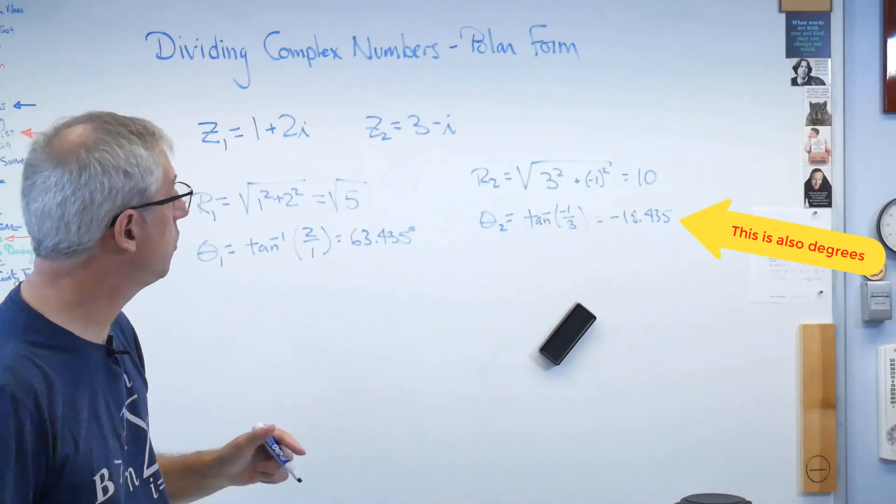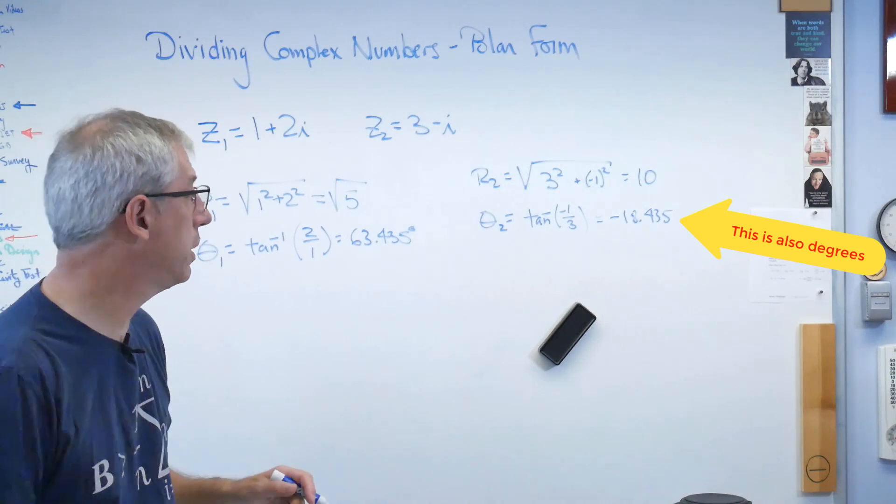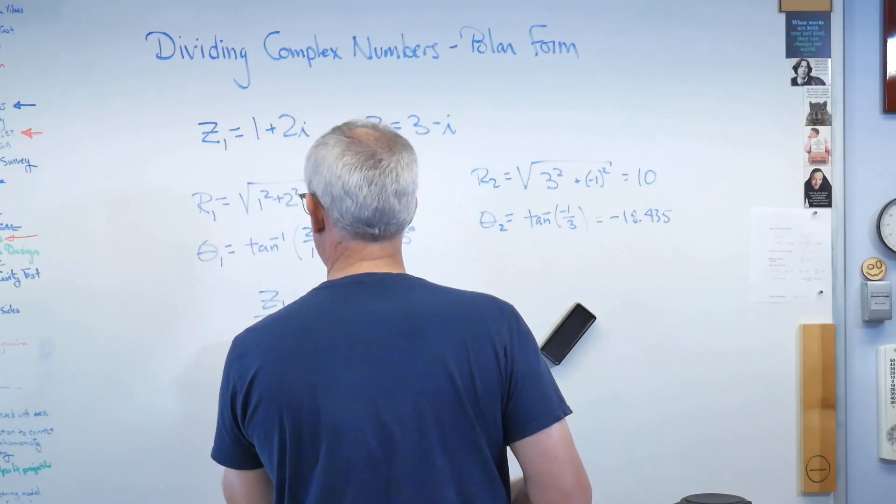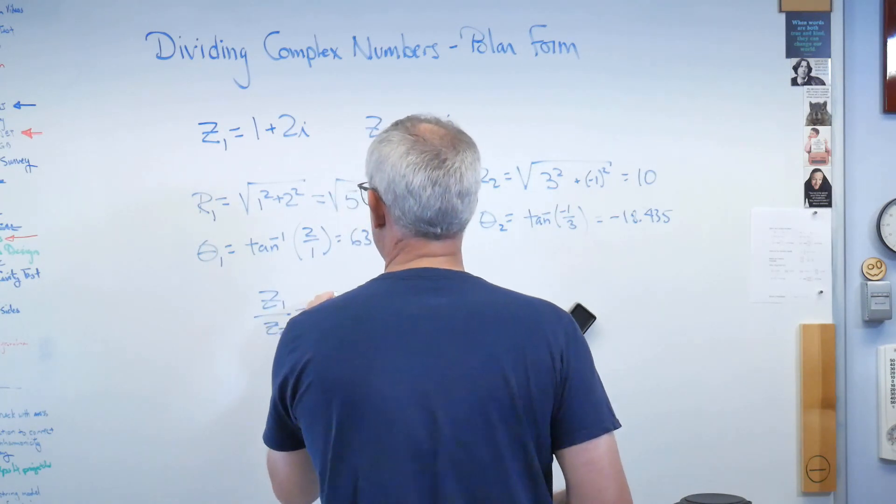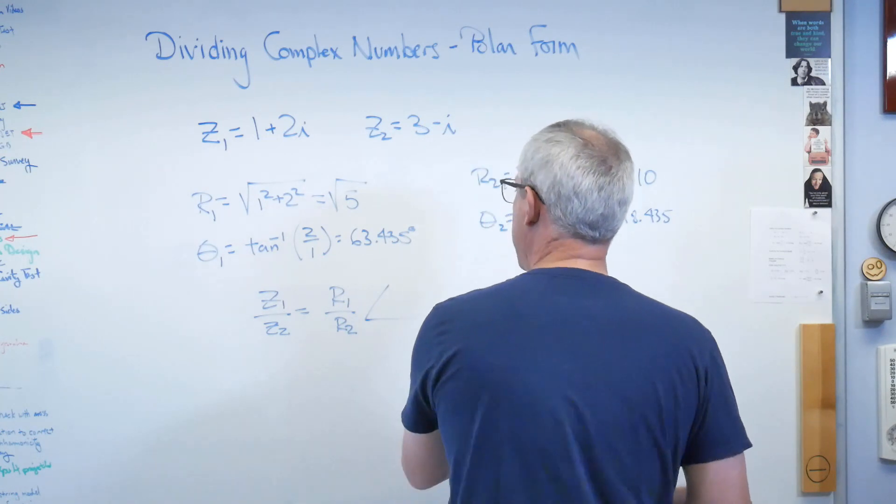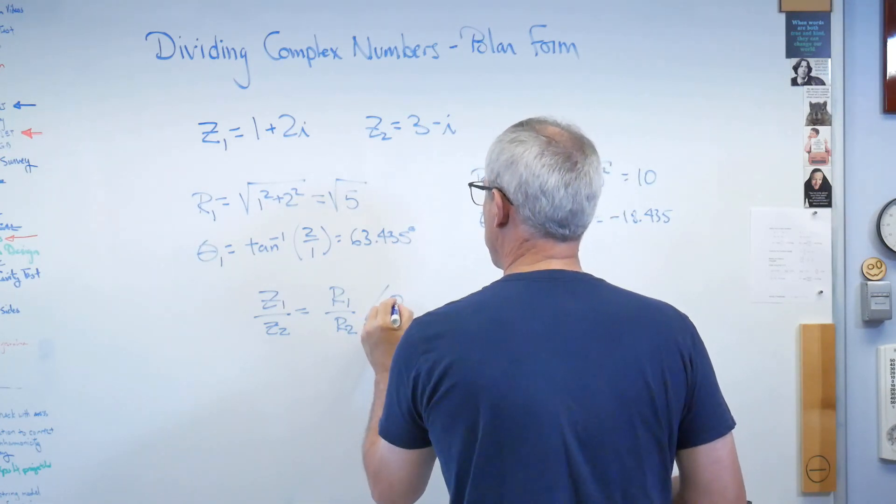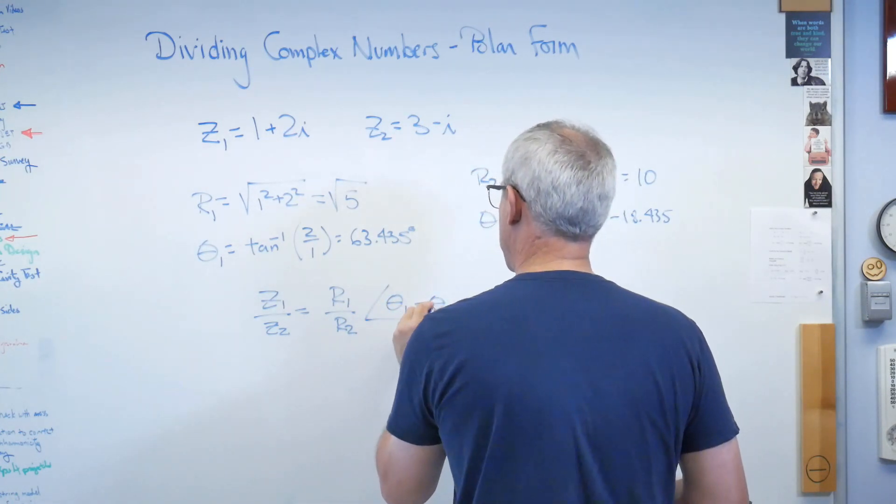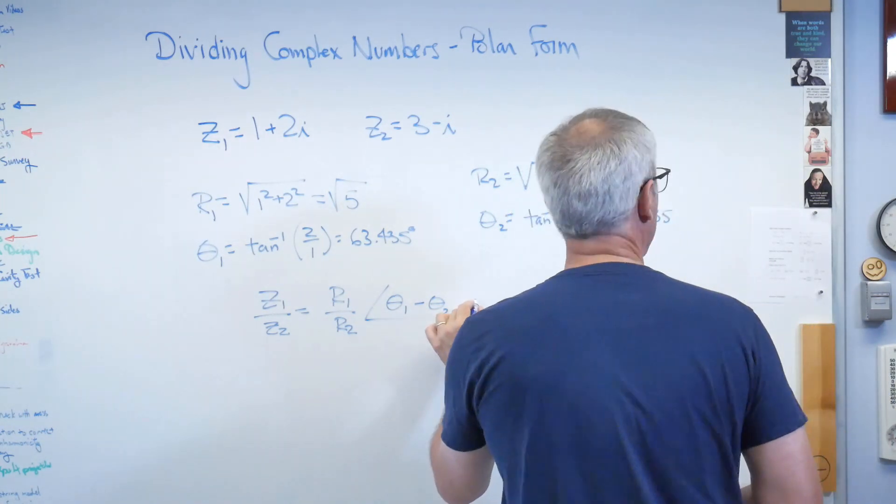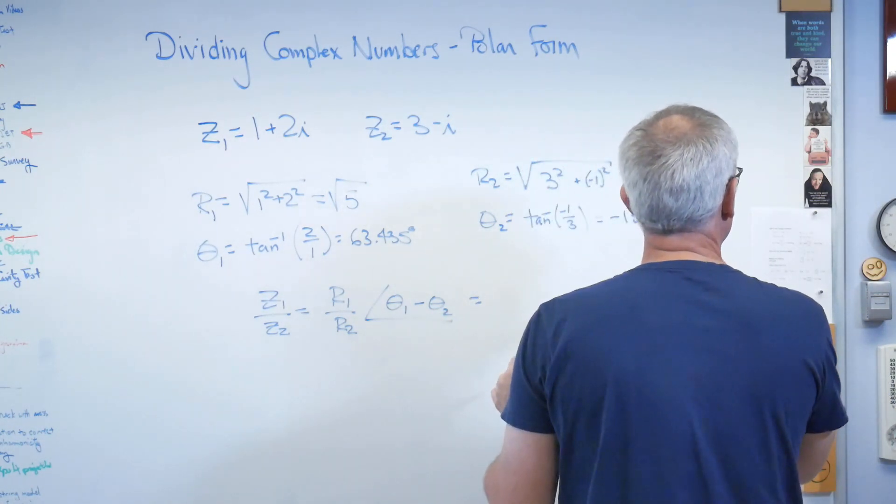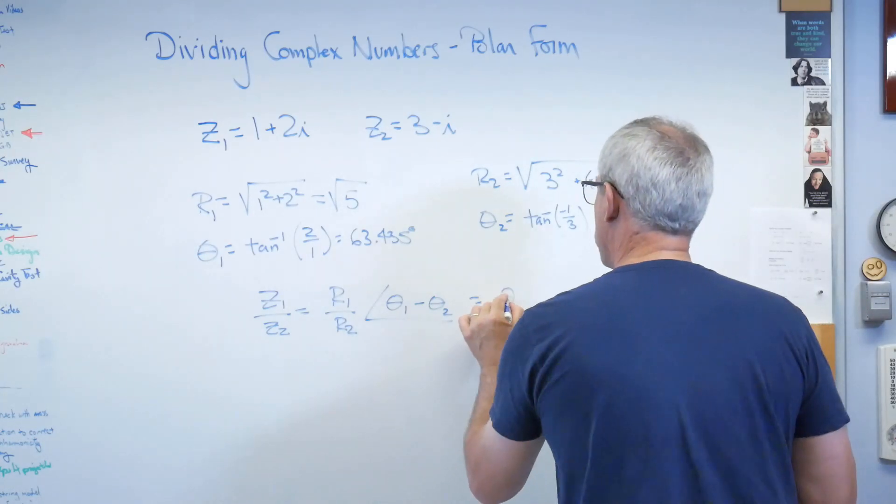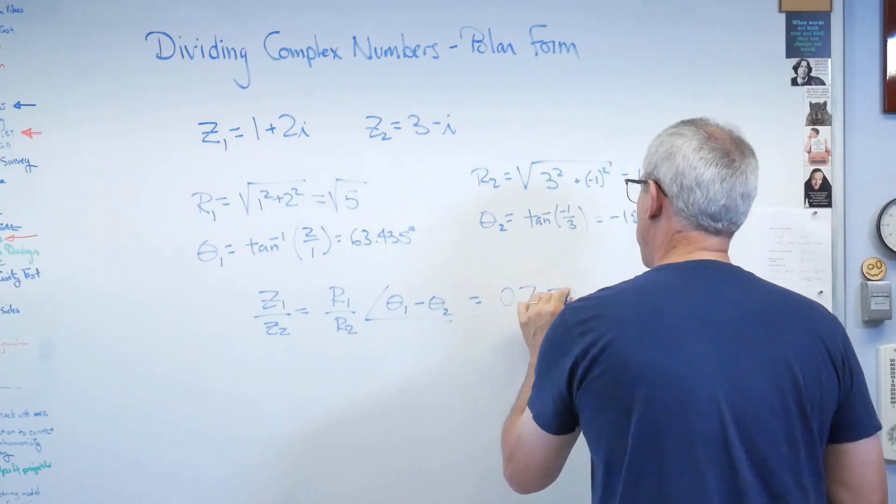Okay. So, how do you divide in polar coordinates? Well, z1 divided by z2 is going to be r1 over r2, and the angle is theta1 minus theta2. That's how this works. And when you do that, I'm going to get, let me make sure I've got this right here,